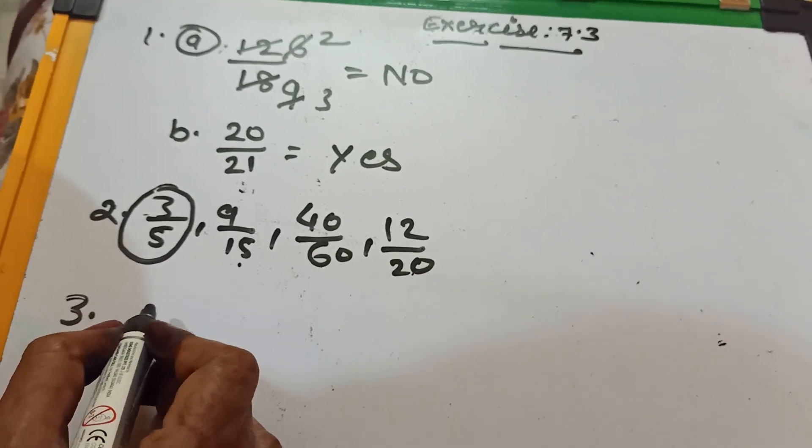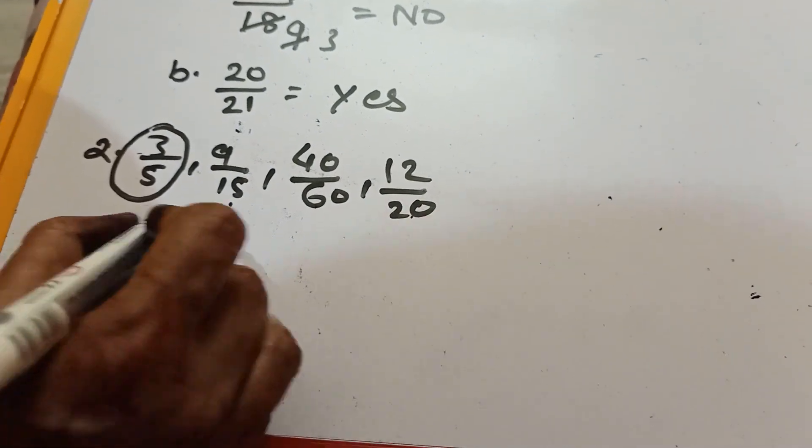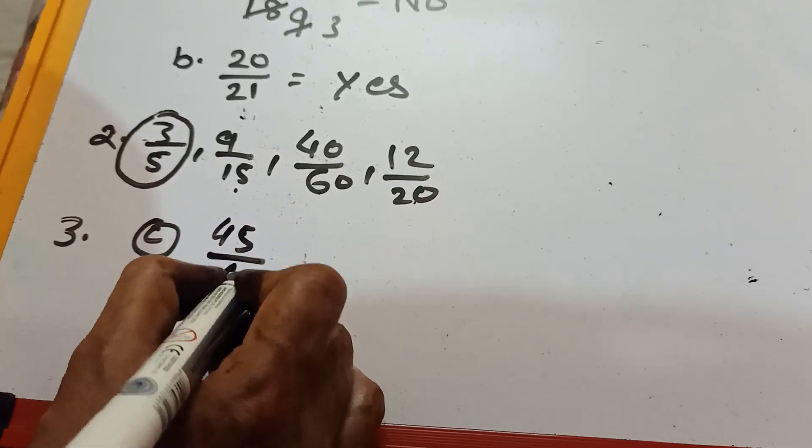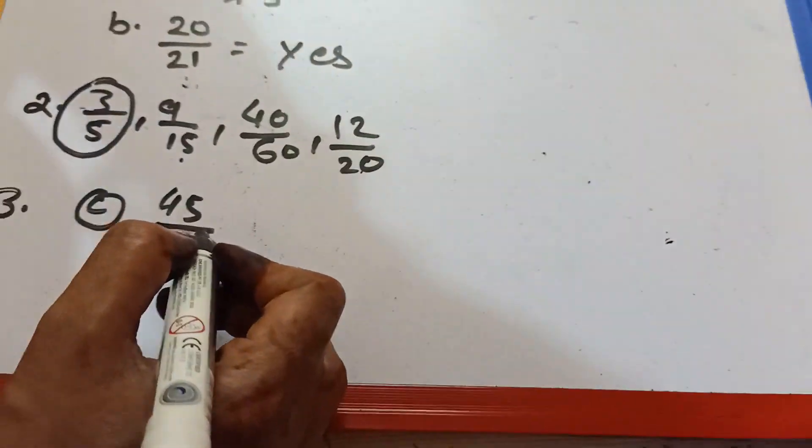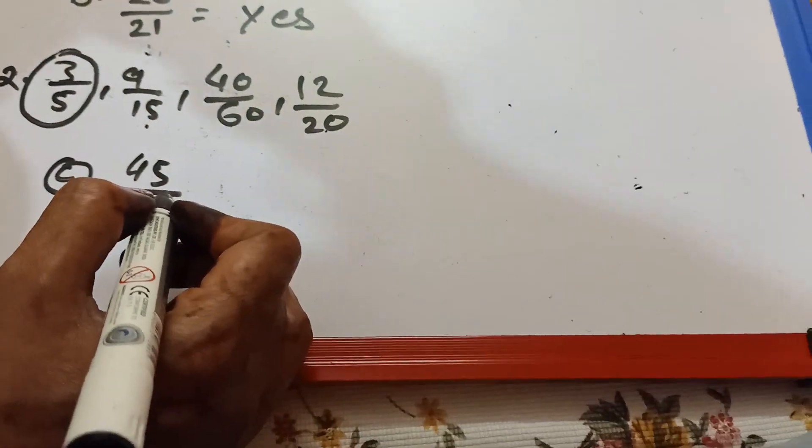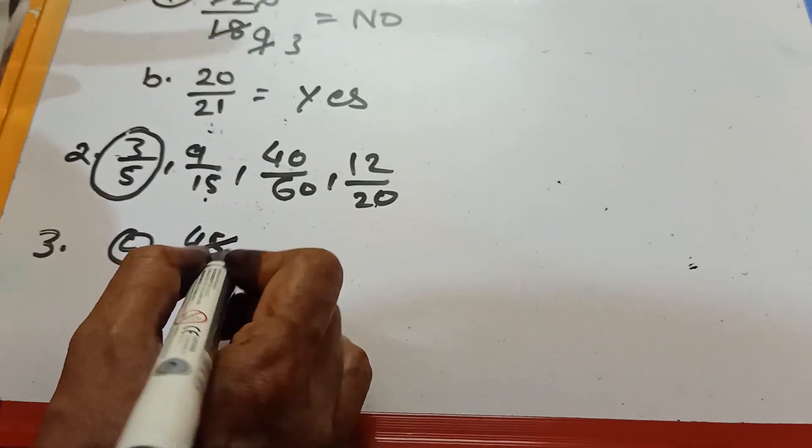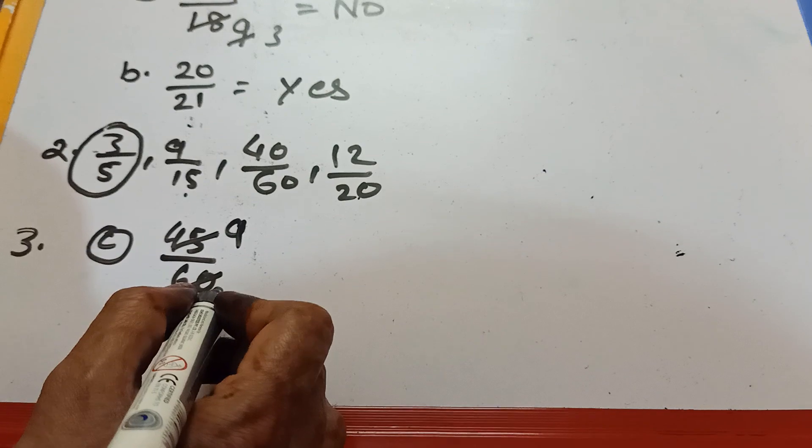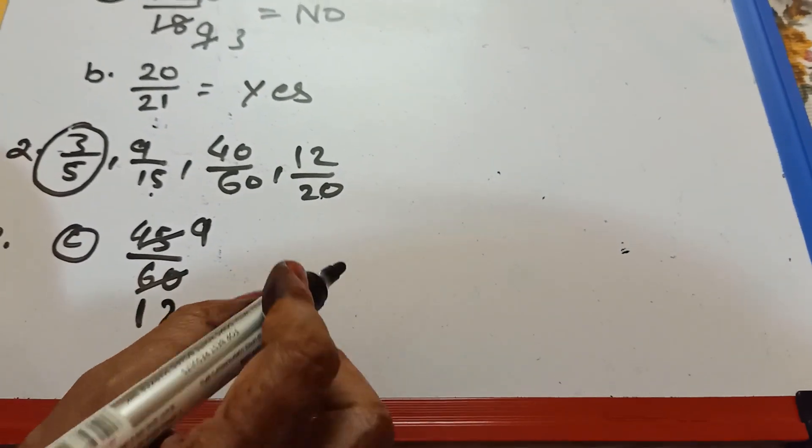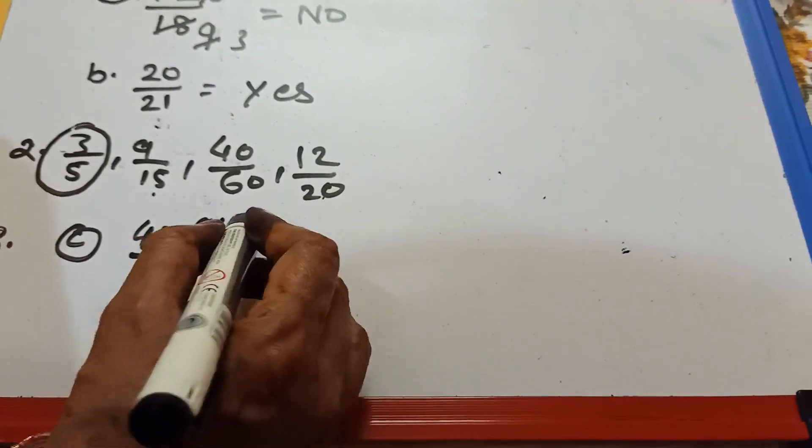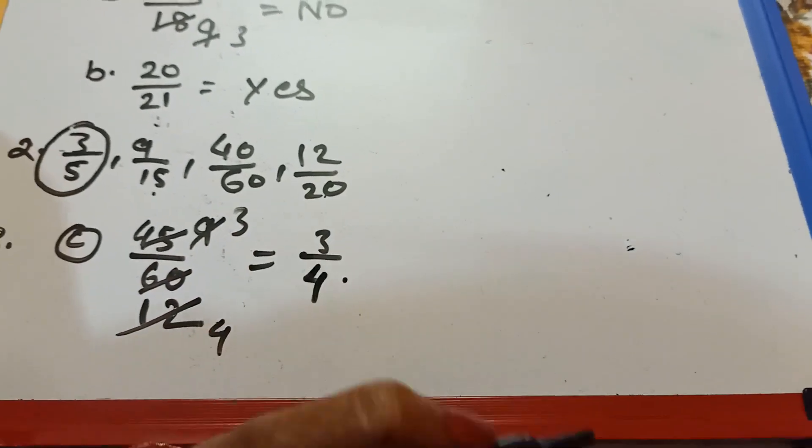Now question number 3. From question number 3, I am taking question number C. 45 by 60. You see 5 and 0, which number we can divide? Remember I have explained before. Because if in last 5 or 0, it is divided by 5. 5 nines are 45 and 5 twelves are 60. Again it is divided by 3. 3 threes are 9, 3 fours are 12. And 3 by 4 is the lowest term of this question.